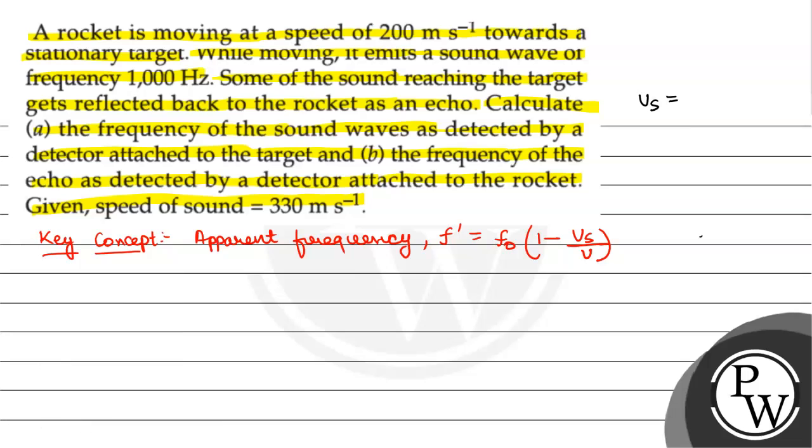Given that vs is 200 meter per second, v is 330 meter per second, f0 is given as 1000 hertz. This is a key concept based question using to the power minus vs by v.